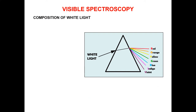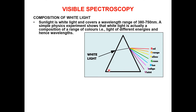Before proceeding towards UV-visible spectroscopy, we should first revise some basic concepts related to light. We should remind ourselves about the composition of white light. As you may have learned in your basic science classes, sunlight is white light and covers a wavelength range of 380 to 750 nanometers. A simple physics experiment shows that white light is actually a composition of a range of colors — light of different energies.